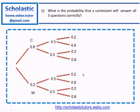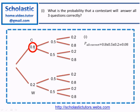Looking at the first question: what is the probability that a contestant will answer all three questions correctly? That is P(all correct). It comes from the branch where the first question is correct with probability 0.8, second question correct with 0.5, and third question correct with 0.2. So 0.8 times 0.5 times 0.2 equals 0.08. That is the answer to question 1.